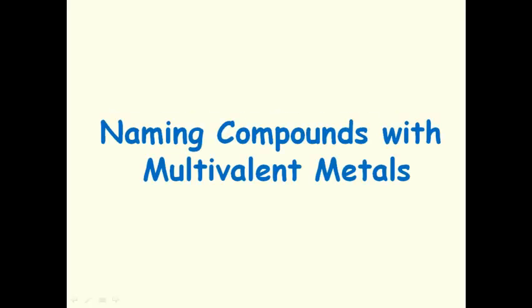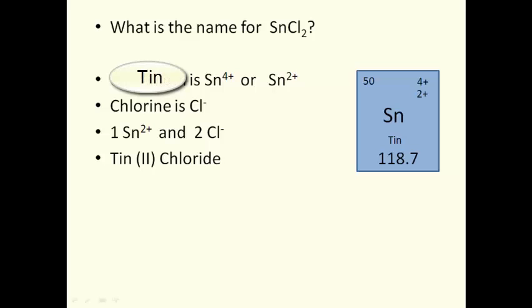Naming compounds with multivalent metals. What is the name for SnCl2? If we look at tin on the periodic table, we see that it has two different ion charges. Tin is either Sn4+ or Sn2+. And we know that chlorine, or the chloride ion, is Cl-.